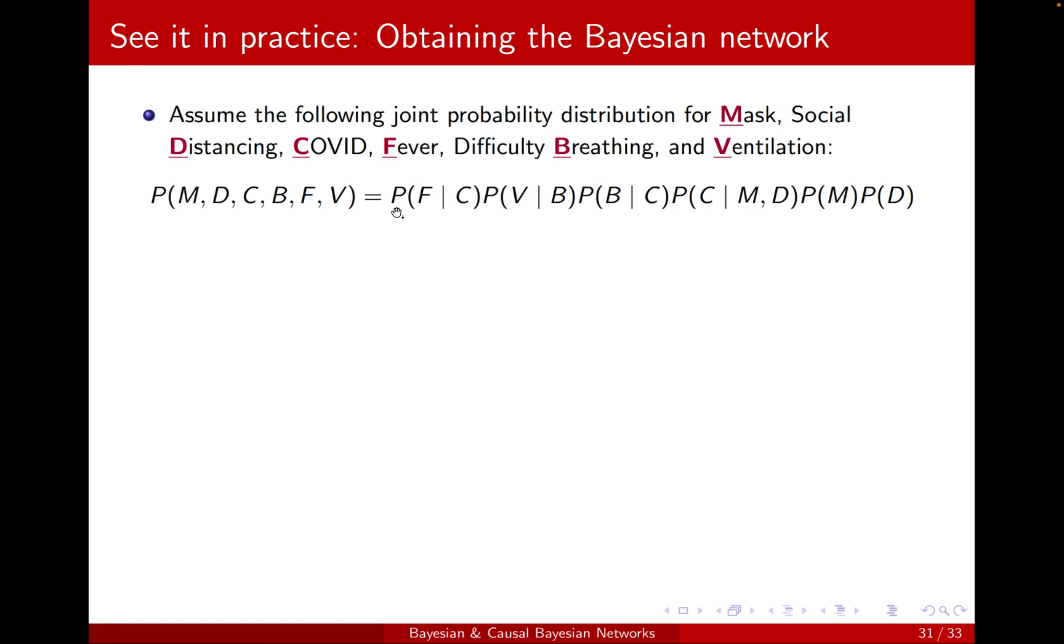Assume that you're given that the joint distribution factorizes in this way. For now, just assume it's given to you. The question is obtain the corresponding Bayesian network. First, we need a Bayesian network structure.